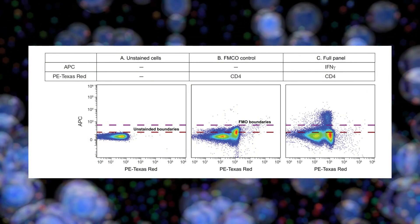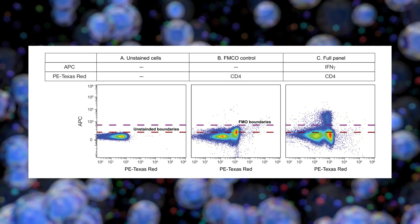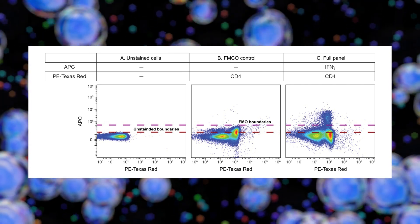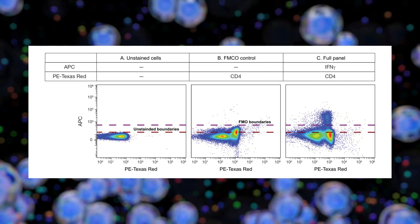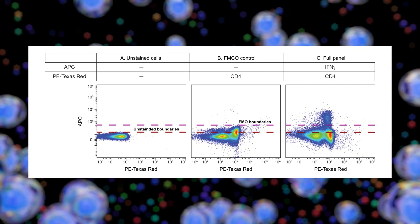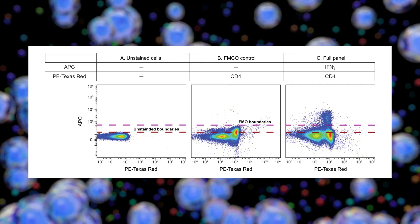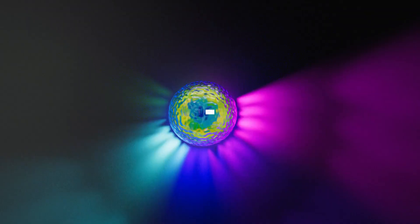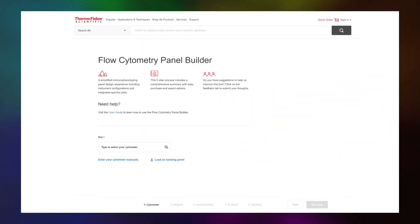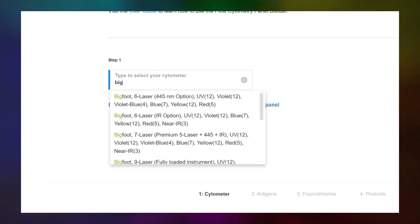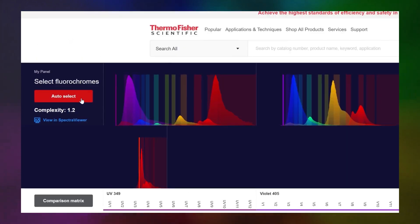Single colour controls and fluorescence minus one (FMO) controls are also essential for multi-colour panel development and QC. FMOs are critical for identifying spread into the omitted fluorophore signature.